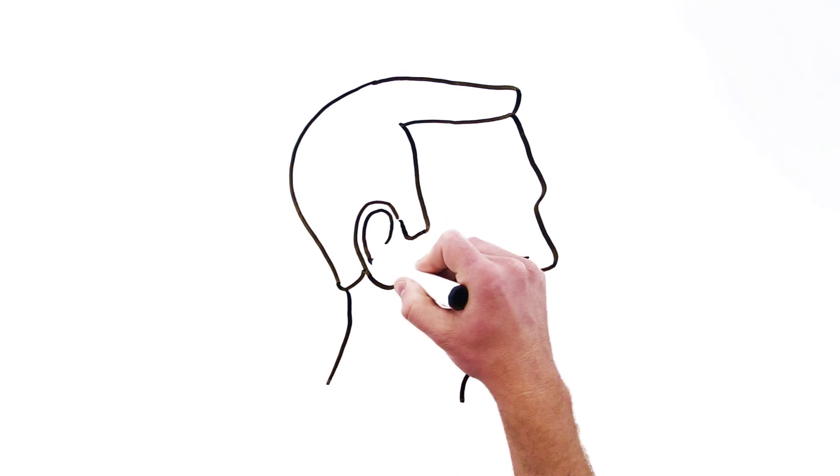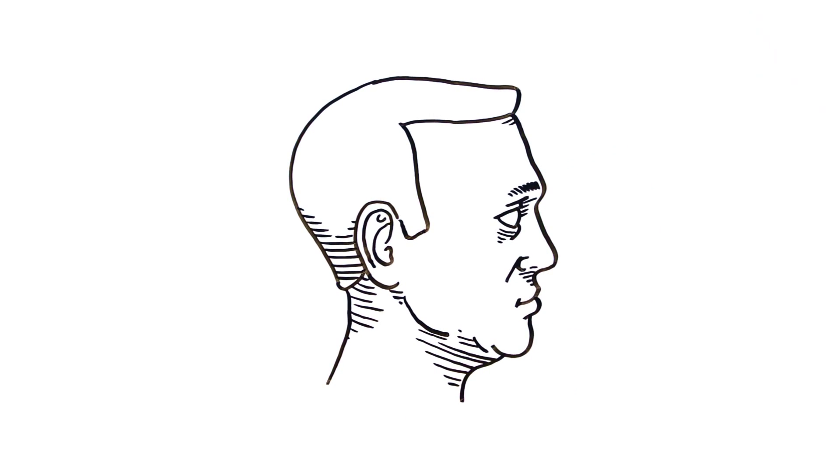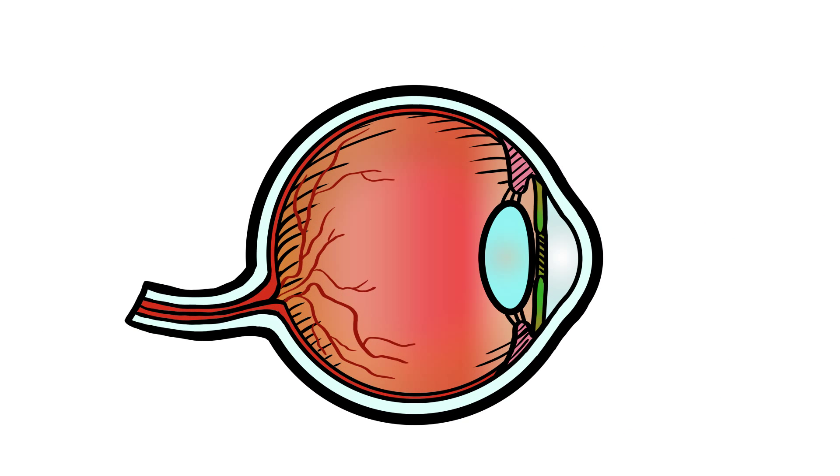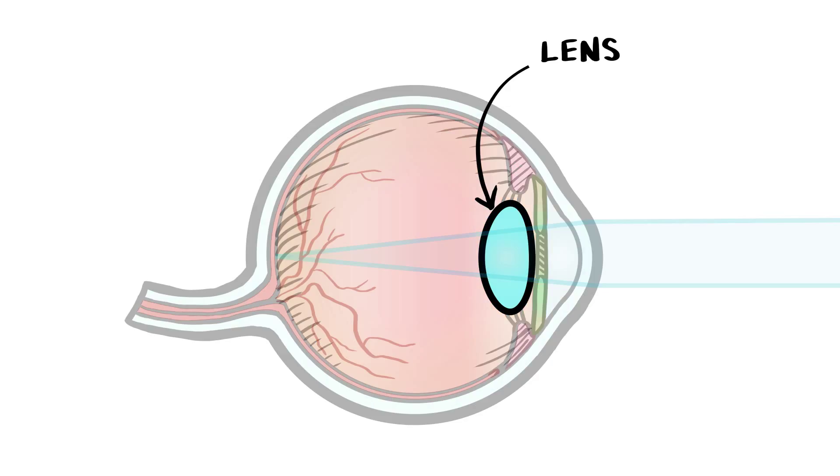Everything we see comes to us in the form of light, and so we have two eyes to help us capture the light and make sense of it. If we could take a look inside the human eye, we would see that on its journey this light passes through a clear, natural lens, about the size of an M&M. It's located just behind the iris, or the colored part of the eye.